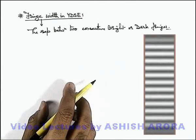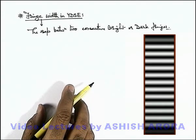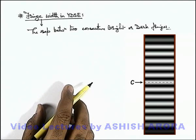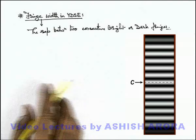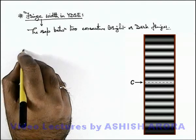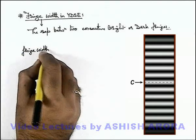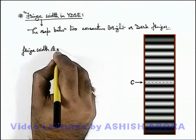Here if we just have a look on this fringe pattern, and say if this is the central maximum of the central bright fringe on screen center, then on any side we can write the fringe width is given as the separation. This is denoted by the term beta.